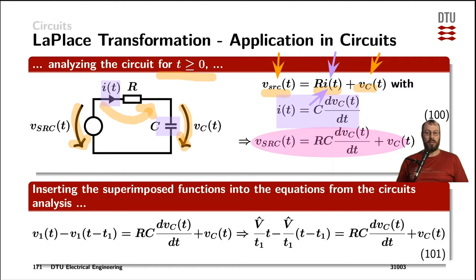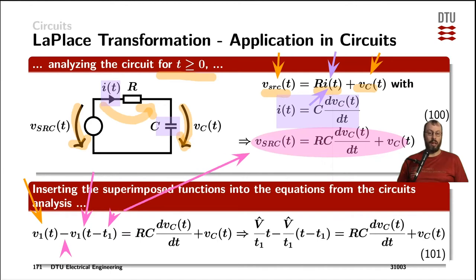So we can start putting in the source voltage from the previous slide — V1, which was the orange waveform, and V2, which was the pink waveform, but also expressed as V1 just with the delay of T1 and the negative slope in the equation. Inserting the time domain functions found on the last slide leaves us with the specific parameters in the next step. The right hand side of the equation is unchanged from equation 100 above.